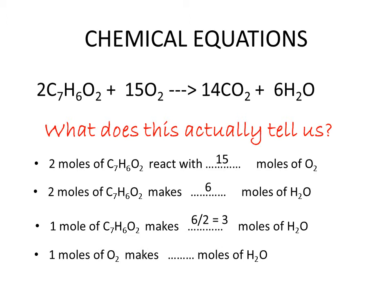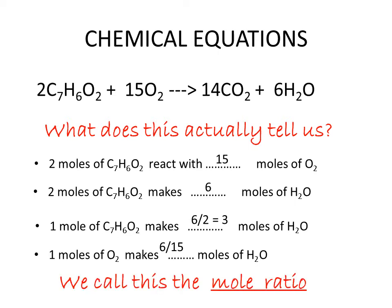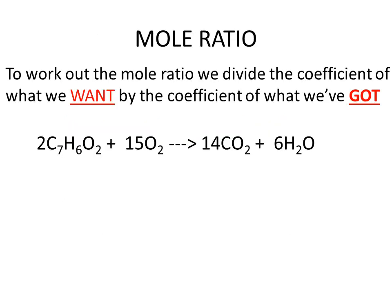But what happens if we only know the amount of oxygen that we had to start with? We can still use the same method. If we have only one mole of oxygen to start with, then we divide the oxygen coefficient by 15 to get one. Therefore, we have to divide the coefficient of the product we want to find out by 15 to predict how much water we will actually make. We call this type of calculation working out the mole ratio.